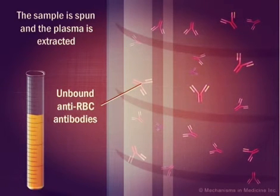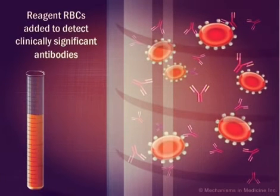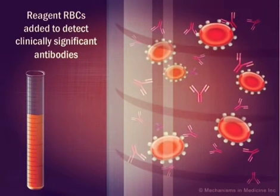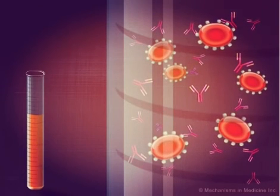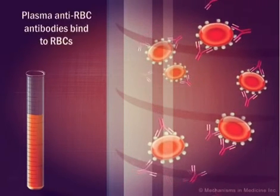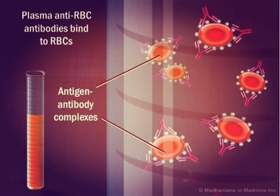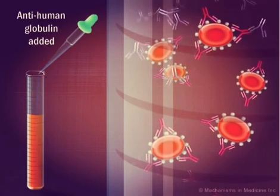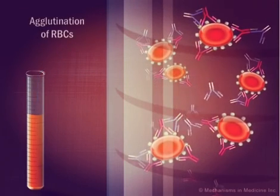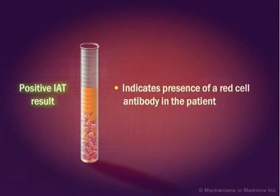The plasma is then incubated with reagent red blood cells selected to detect specific antibodies that are considered clinically significant. The anti-red blood cell antibodies of the patient's plasma bind to reagent red blood cells to form antigen-antibody complexes. The addition of anti-human globulin to these complexes results in agglutination of the red blood cells. A positive IAT indicates the presence of a red cell antibody in the patient.